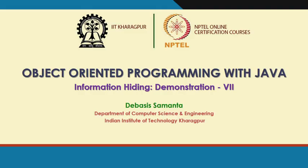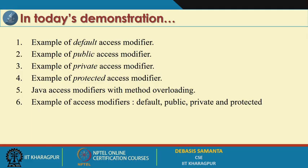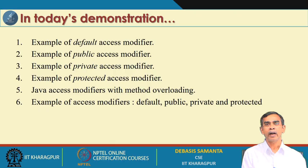Information hiding is a very important object-oriented paradigm and has been featured in Java programming. We have discussed information hiding in our last module. Now it is time to have a quick demo of information hiding concepts in Java. Information hiding in Java is implemented by means of four access specifiers: default, public, private, and protected. In this demonstration we will show how different access modifiers provide different access protection for different classes in Java.